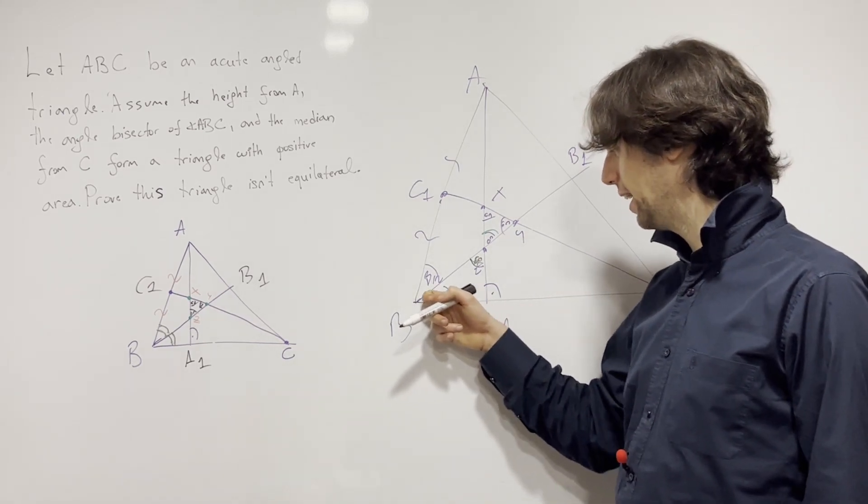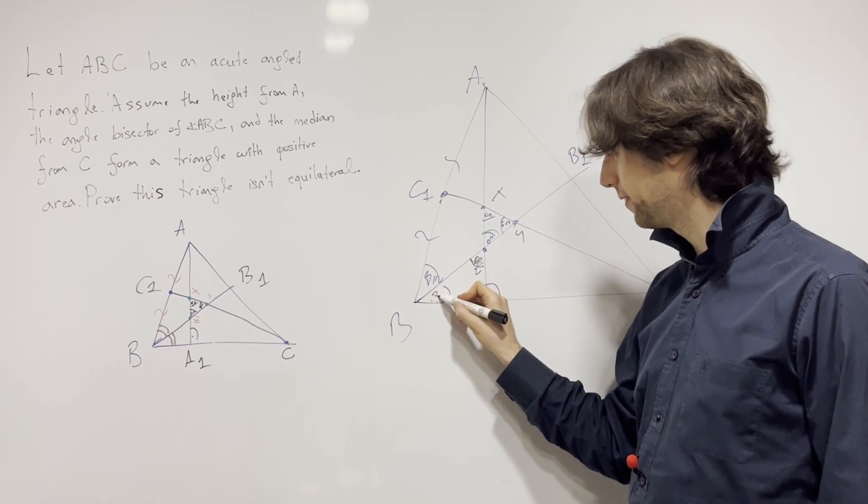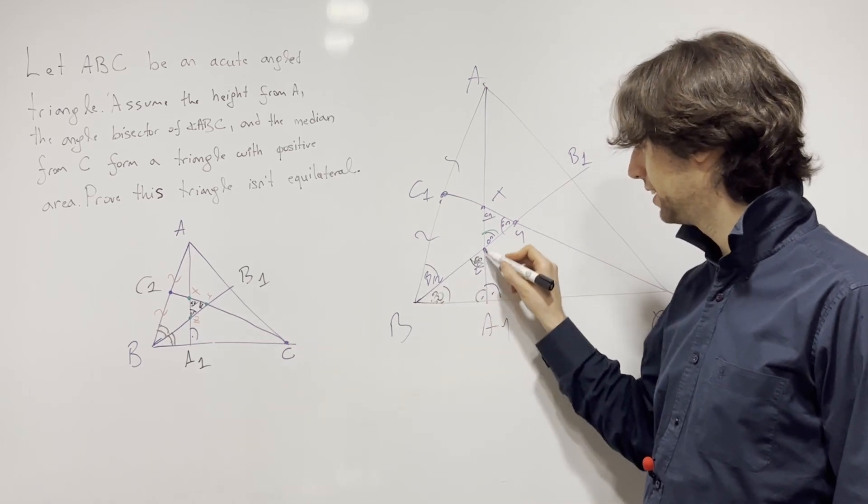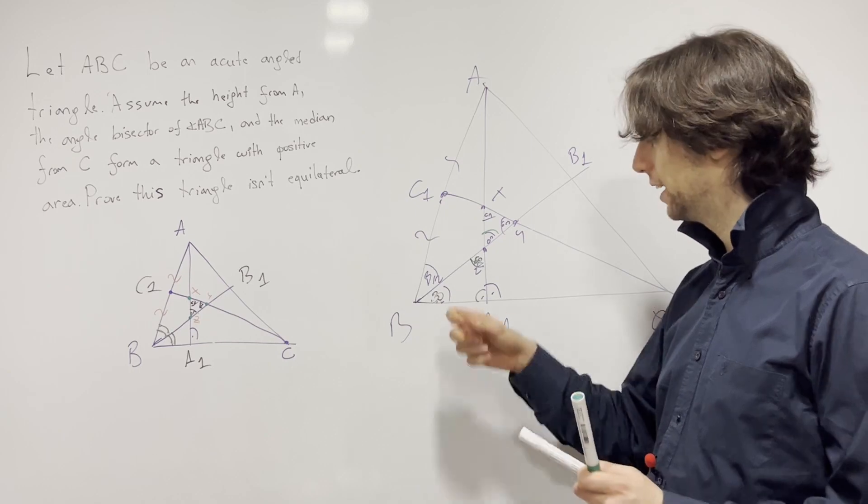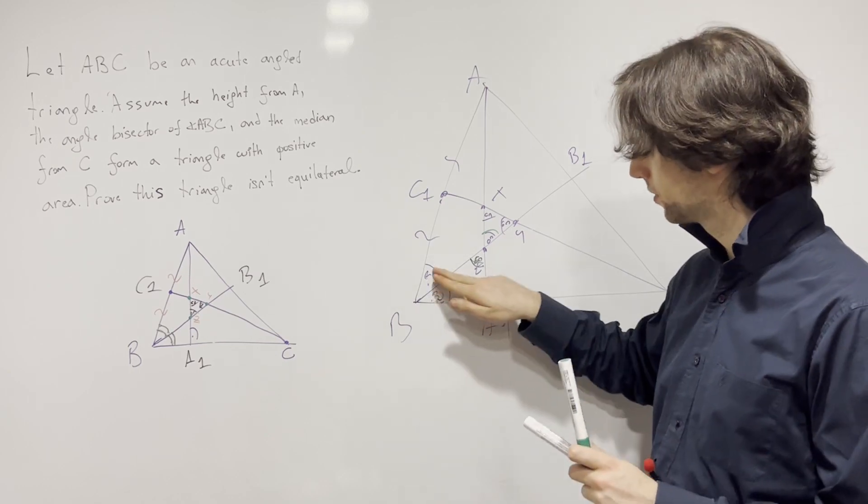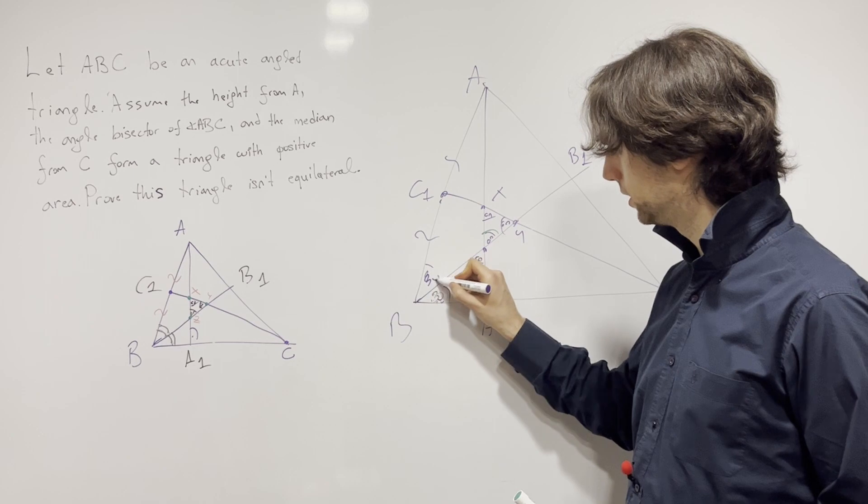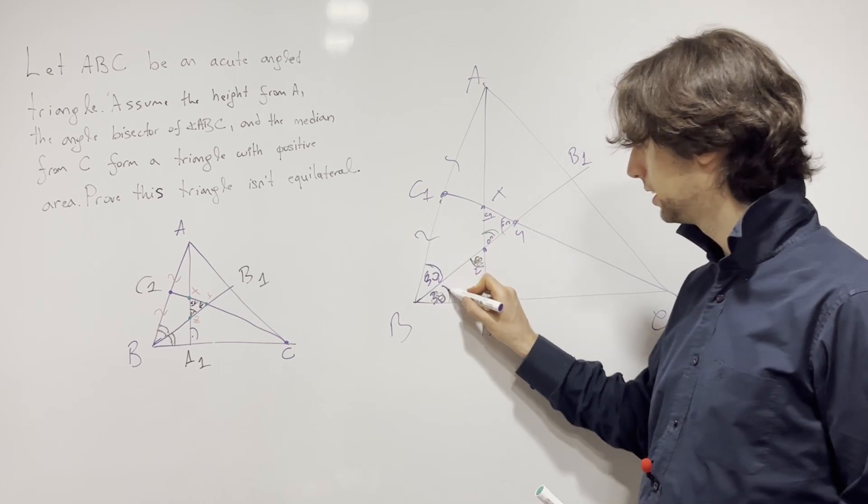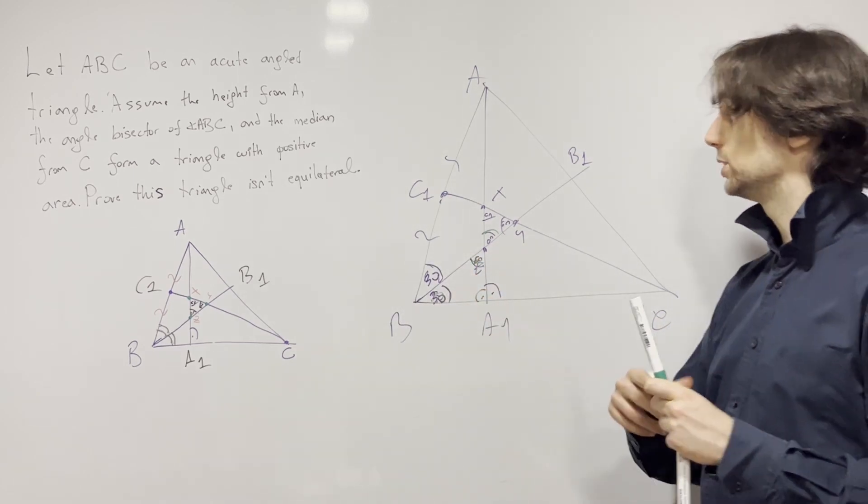And now this is very cool. Why is that very cool? Because now beta half needs to be 30 because this is a 90, 60, 30, 90. I now know this angle is 30, which also gives me that this angle right here is 30 as well. So beta is now we know 60.